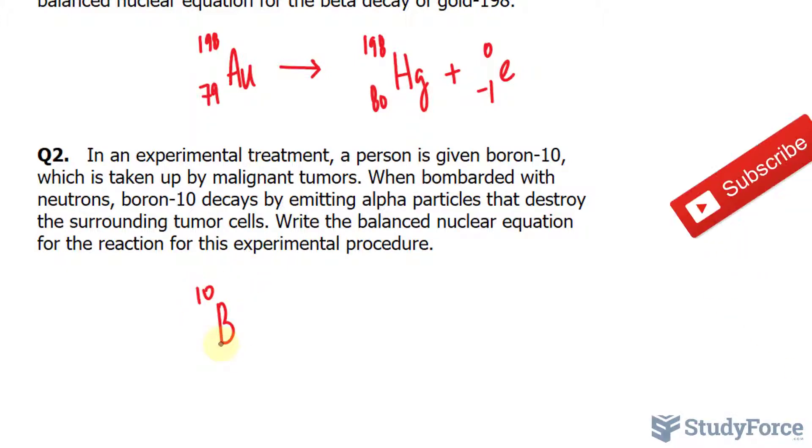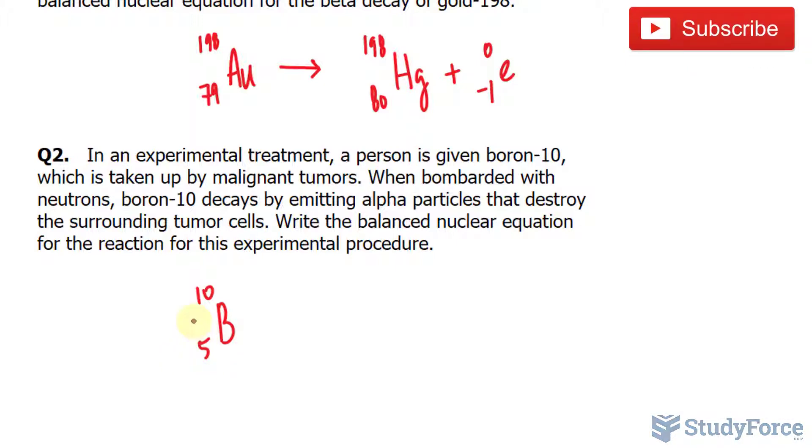So we have boron and it's being bombarded. Boron happens to be the fifth element. It's being bombarded by neutrons. So I'll write down plus, neutron has a mass of 1, no protons obviously. And as a result,